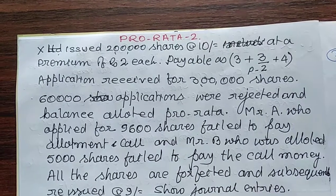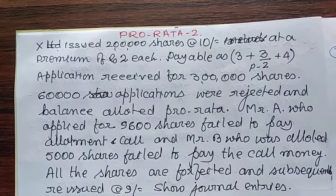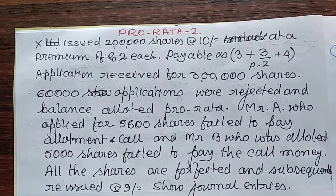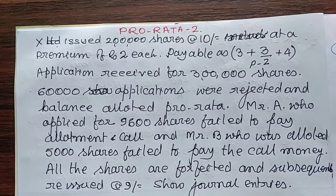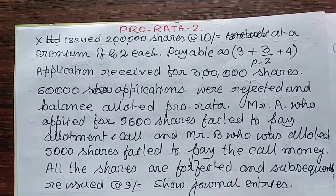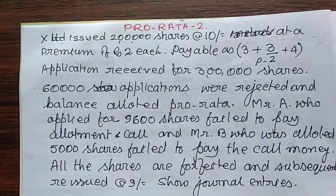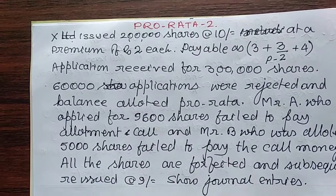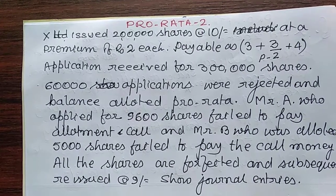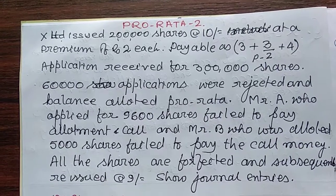Let us take a sum. X Limited issued 2 lakh shares of Rs. 10 each at a premium of Rs. 2, payable as Rs. 3 on application, Rs. 5 on allotment including premium of Rs. 2, and Rs. 4 on call. Applications were received for 3 lakh shares. 60,000 share applications were rejected, so we have 2 lakh 40,000 shares remaining.